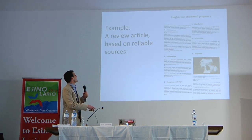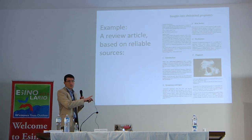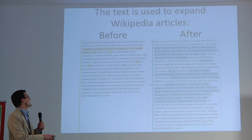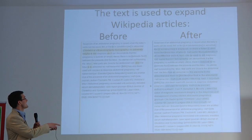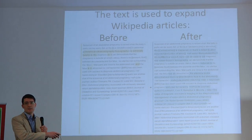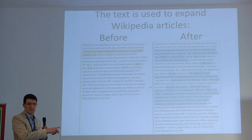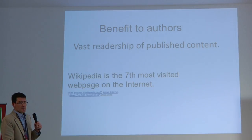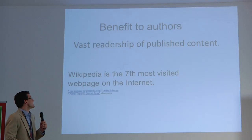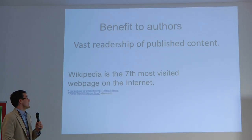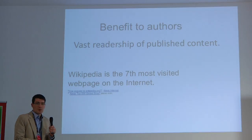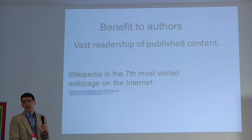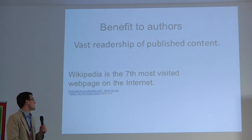Here's an example of a review article, which is in turn based on reliable sources. What you can then do is copy the text into the corresponding Wikipedia articles. A major benefit of publishing in this journal is that you get a vast readership of the published content. Wikipedia is, after all, the seventh most visited web page on the internet, and many articles have over 100,000 views per month.